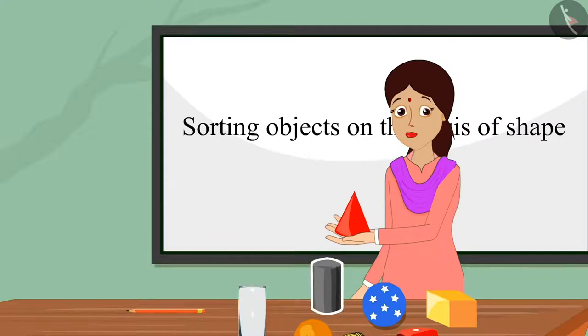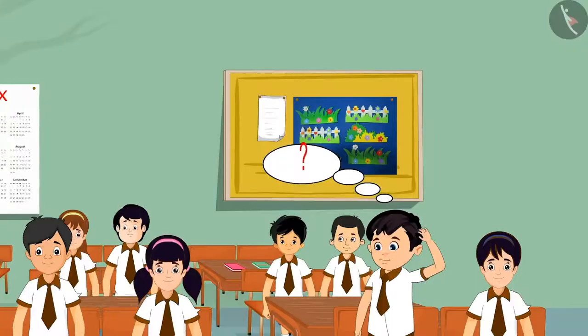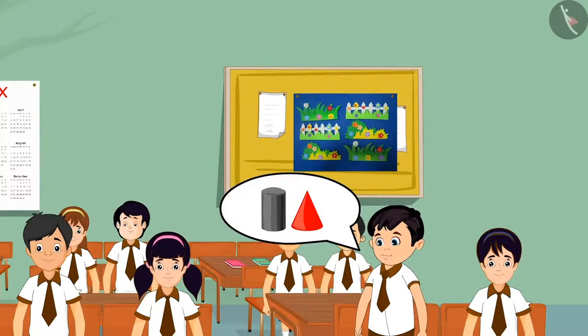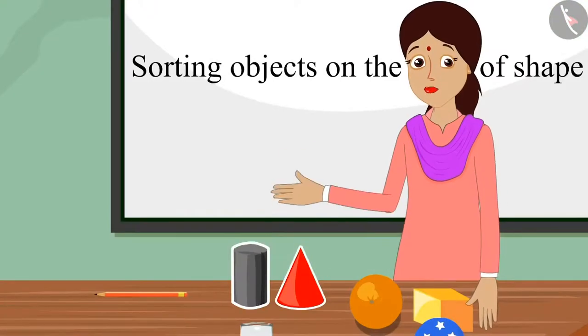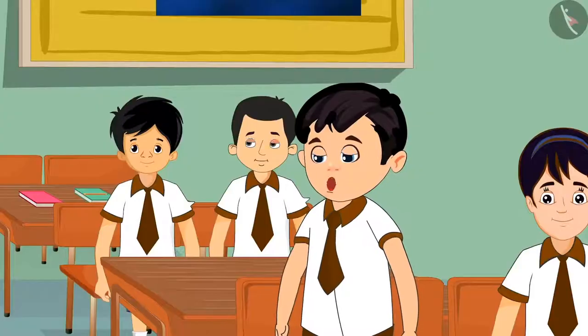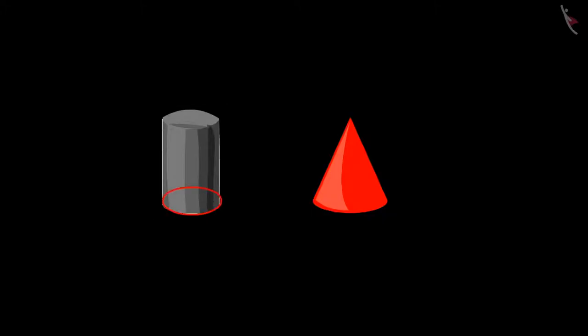Here we have a shape that looks like a cylinder, but Chotu did not understand the difference between these two figures. Chotu says: 'But both these shapes look alike — this shape's base is round, and the other shape also has a round base.' The teacher agrees: 'You are right, Chotu, both of these shapes are round at the bottom.'